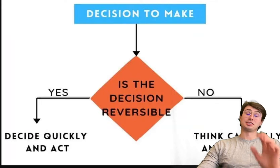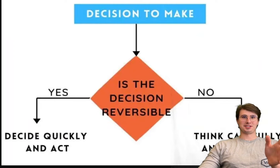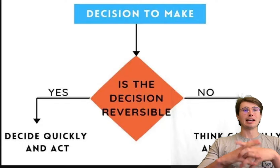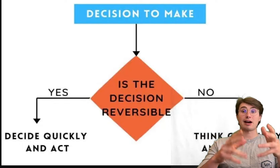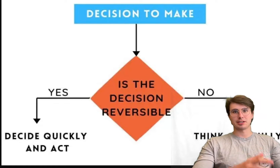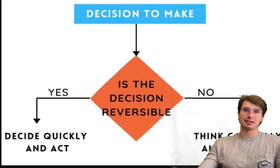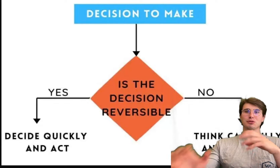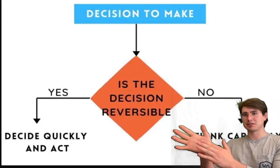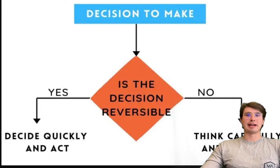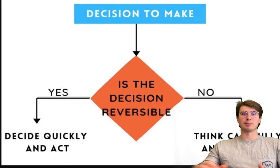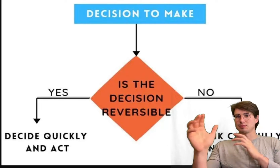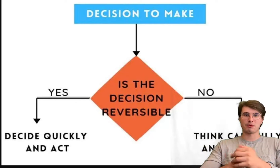The seventh principle is to make reversible decisions. In the fast-paced world of data engineering, the ability to revert decisions is really important. This principle involves choosing strategies and technologies that allow for reversibility, enabling organizations to experiment with new approaches without long-term commitment. Jeff Bezos's framework is a useful guide: if a decision is reversible, decide quickly and act; if it's not, think carefully then act. Spotify applies this by using Google Cloud Platform's modular services, allowing them to switch between different configurations or even move to another cloud provider if necessary.